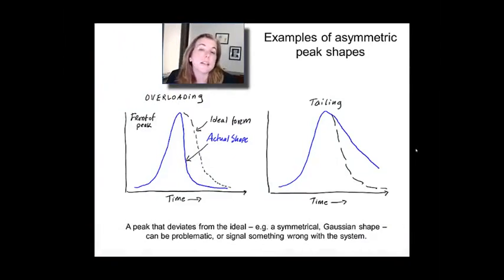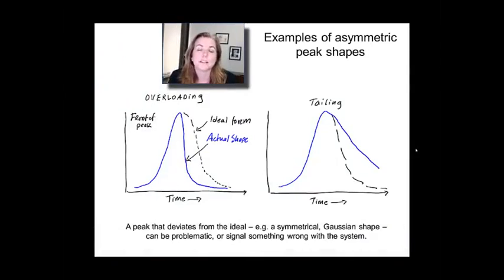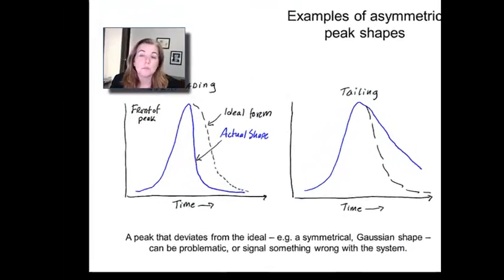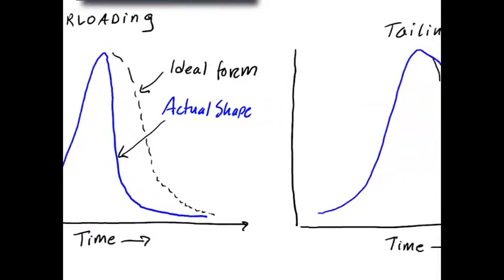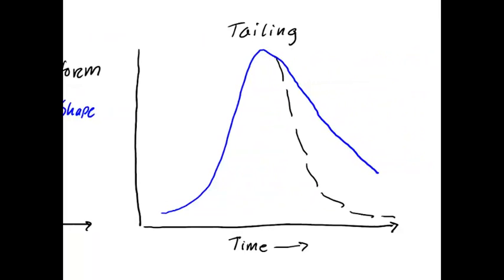So here's a couple of examples of the kinds of peak shapes that you actually may see in practice. Sometimes you'll get something called overloading, as I'll describe in a second, in which your peak basically looks like you're missing everything that comes at long times. Or sometimes you get tailing, which is you get this very long tail to very long times.